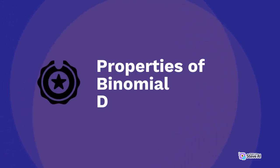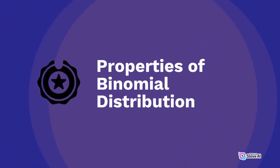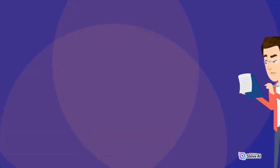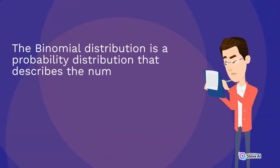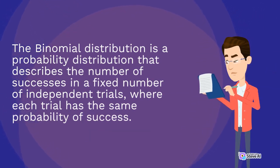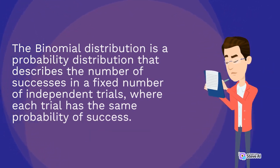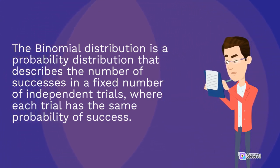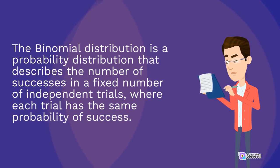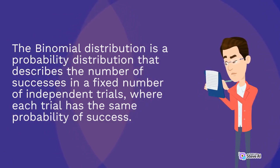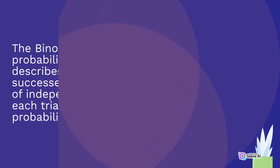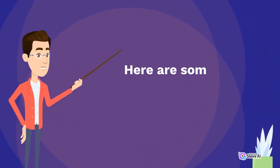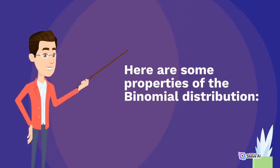Properties of Binomial Distribution. The binomial distribution is a probability distribution that describes the number of successes in a fixed number of independent trials, where each trial has the same probability of success. Here are some properties of the binomial distribution.